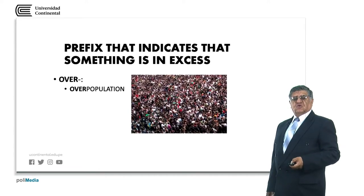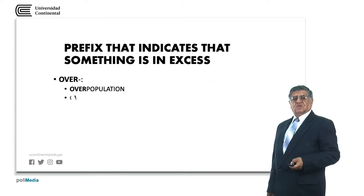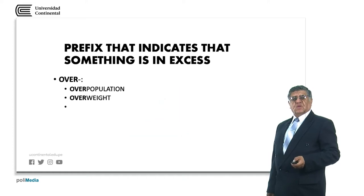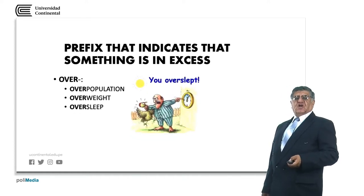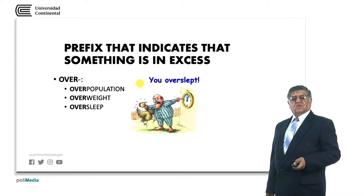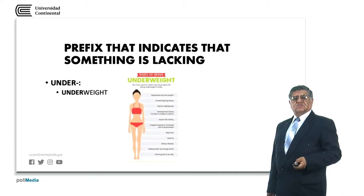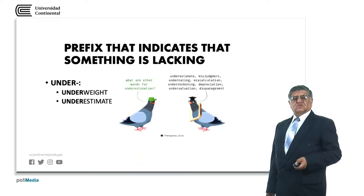Over- means more than necessary. Overpopulation means a lot of population, more than necessary most of the time, more than possible. Overweight means more weight than recommendable. Oversleep means to sleep more time than was planned or necessary. Under- means below. Underweight means not enough weight according to size. Underestimate means to estimate below the real situation, below the real numbers.